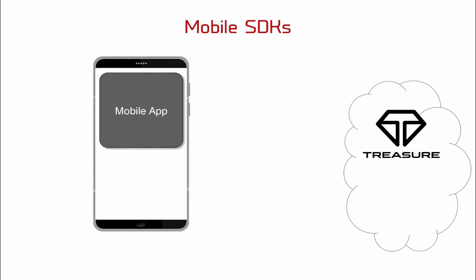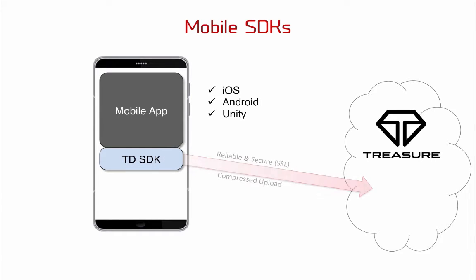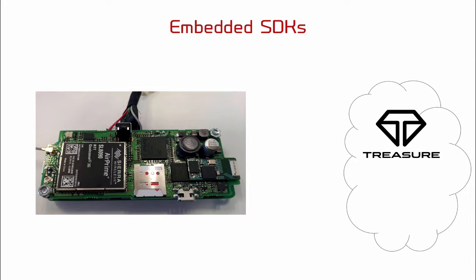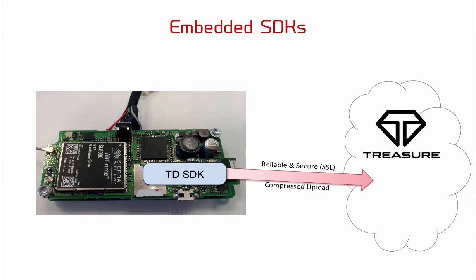For mobile applications that don't have a significant server-side component, it's more attractive to collect events on the mobile device and send them directly to the TreasureData service instead of through a TreasureAgent. For these scenarios, we have mobile SDKs for iOS, Android, and Unity-based games. For certain industries with special mobile device requirements, such as automotive telematics, we've also worked with customers to build custom embedded SDKs.